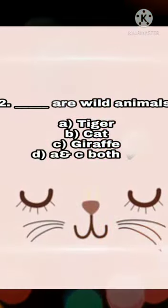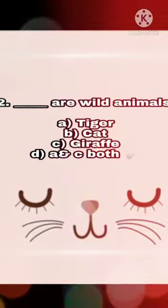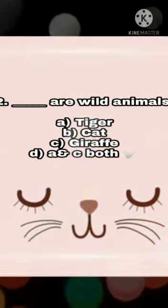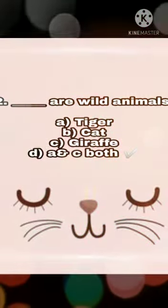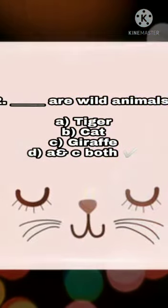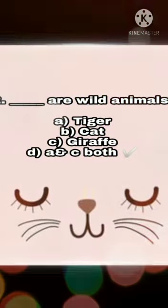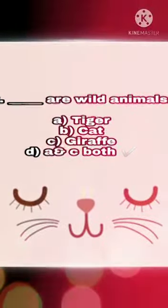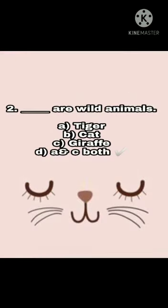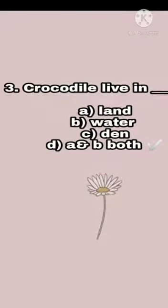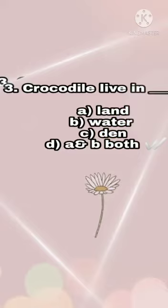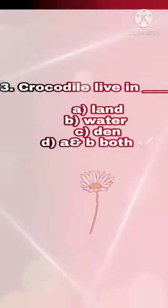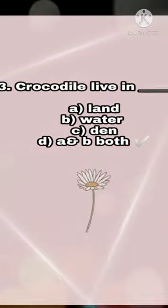Question two: Dash are wild animals — tiger, cat, giraffe, or A and C both? The correct option is D, A and C both. Tiger and giraffe are wild animals.